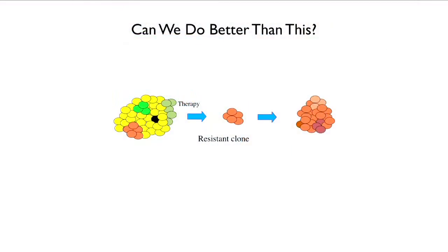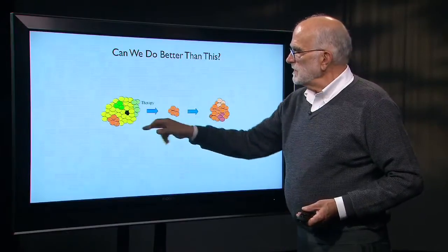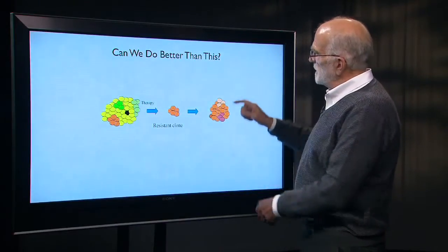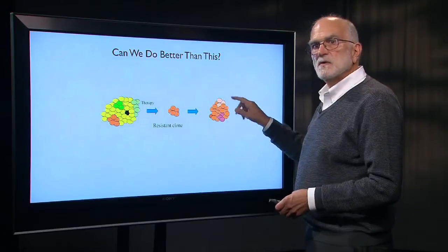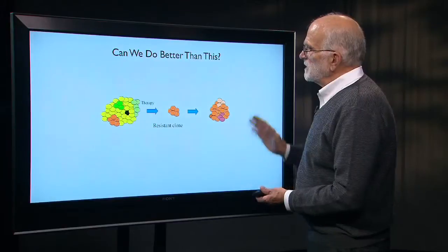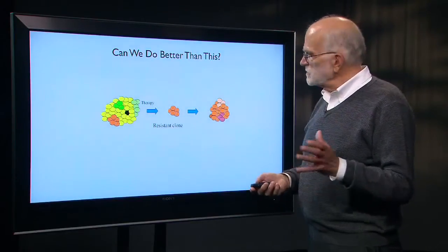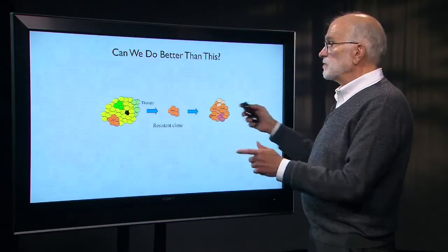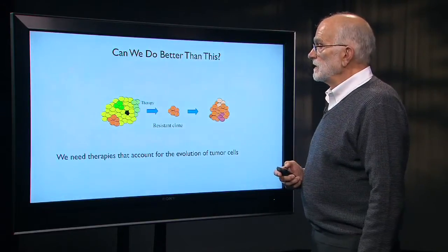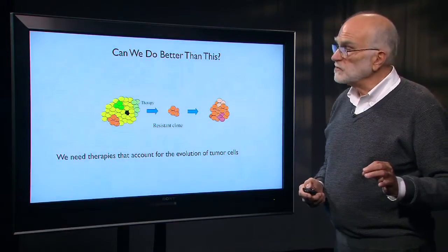The question is, can we do better? Here you see a heterogeneous set of clones in a cancer. Therapy is applied, which selects a resistant clone. The resistant clone expands and begins sending off new clones, becoming genetically heterogeneous again. If we come back and hit it with therapy again, it has enough genetic variation that some cells will be resistant, and that process repeats. We need therapies that can account for the evolution of tumor cells.